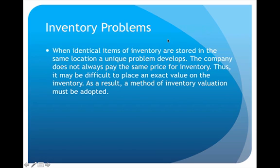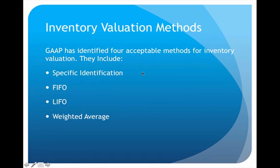As a result of that problem, we need a method of inventory valuation. According to GAAP — generally accepted accounting principles — we have four possible methods of inventory valuation, and all four are considered acceptable and approved. Different companies have different preferences, so we need to know all four. The four methods are: specific identification, FIFO, LIFO, and weighted average.